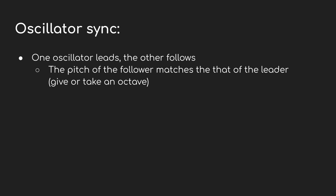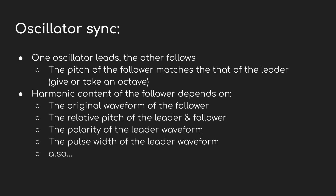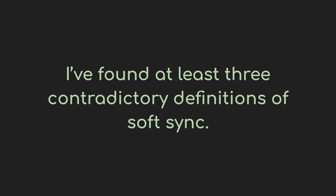Let's recap: we know that syncing oscillators forces the following oscillator to take on the same pitch — give or take an octave — of the leading oscillator. The quality of the output depends on the waveform of the follower, but also the relative speeds of the leader and follower can make a big difference, as can the polarity of the pulses from the leader. And though I didn't demonstrate it here, the pulse width can really change things up too. That's a lot of variables for what we originally just saw as a simple switch to flip or a modular input.